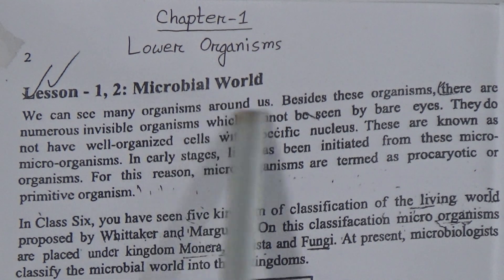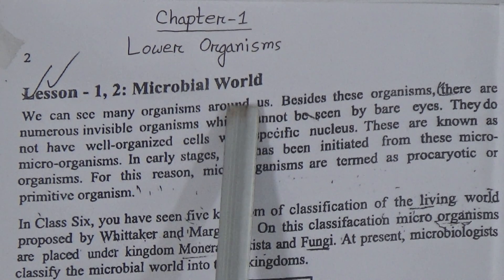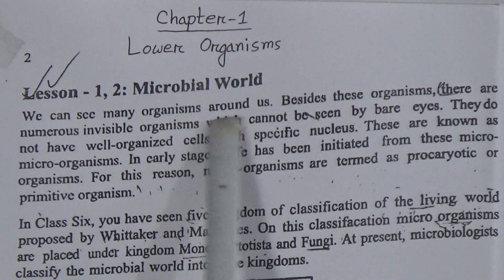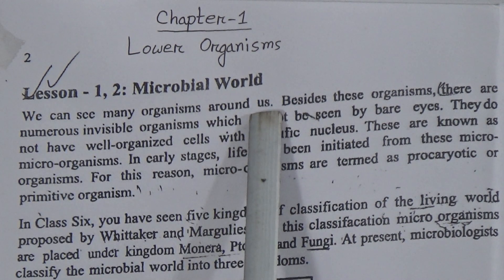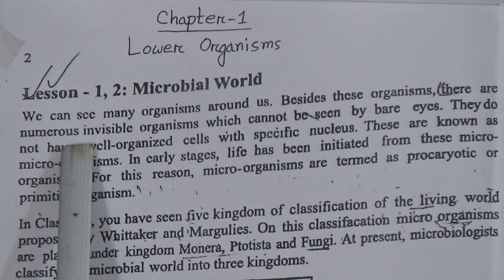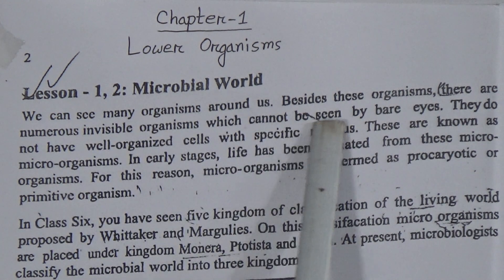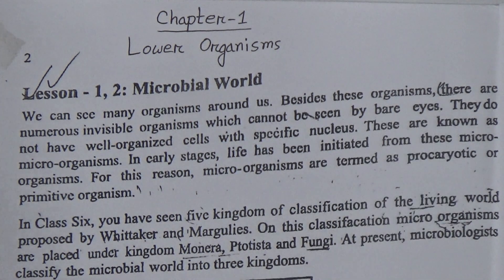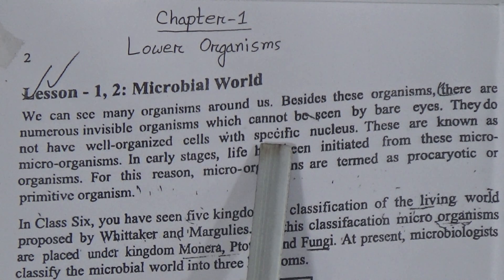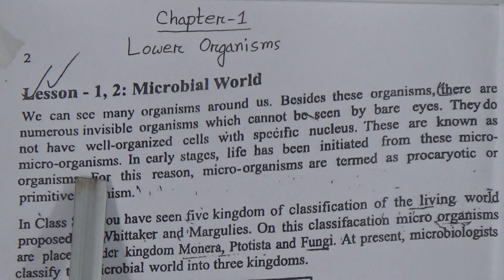That means we can see these organisms only under an electric microscope. We can see many organisms around us. Besides these, there are numerous invisible organisms that cannot be seen by the naked eye. They do not have real organism cells with specific structures. These are known as micro-organisms.